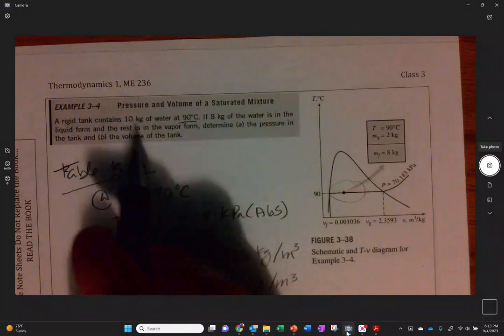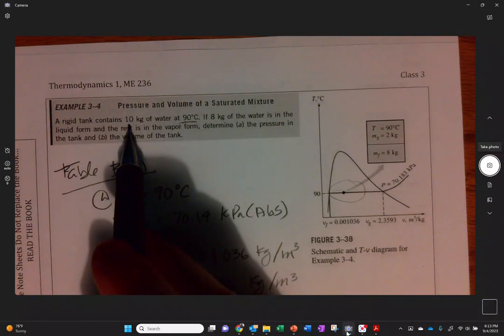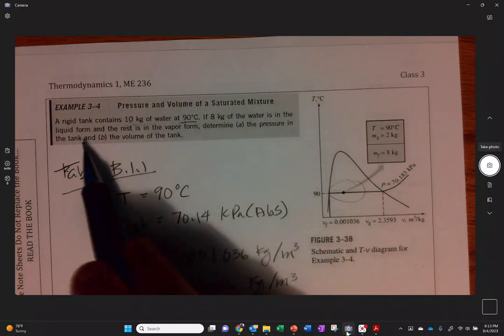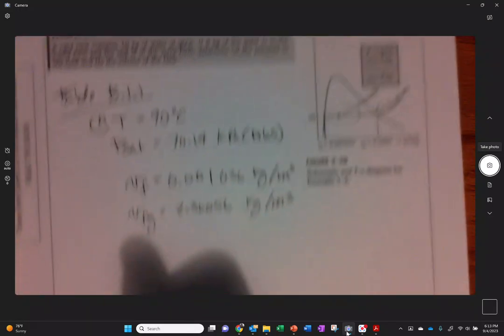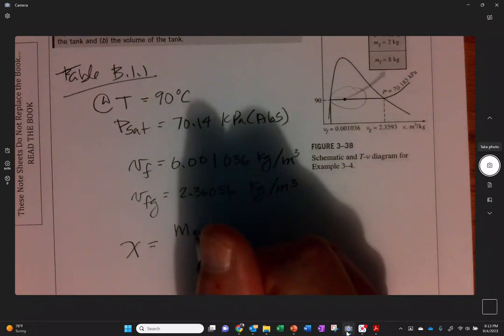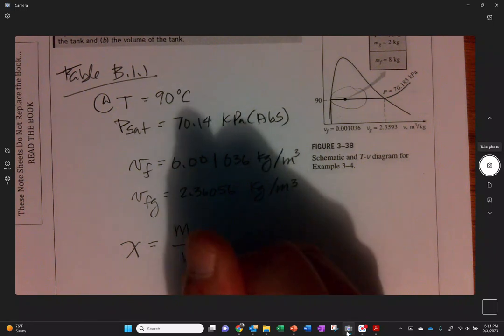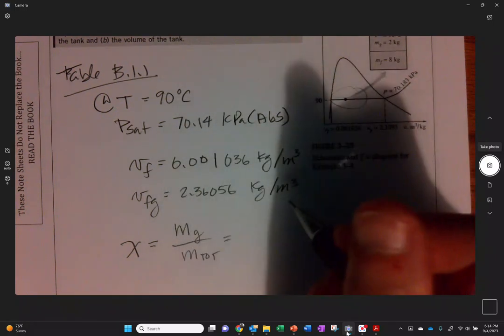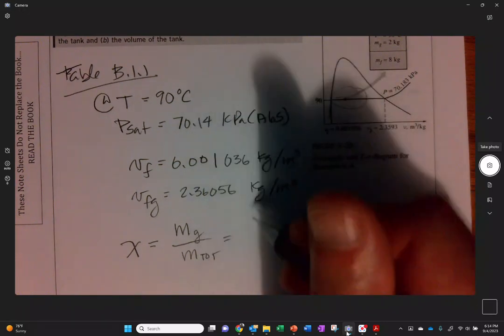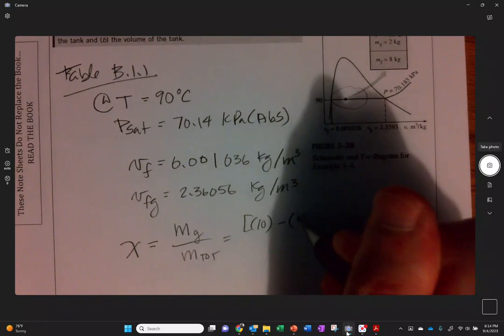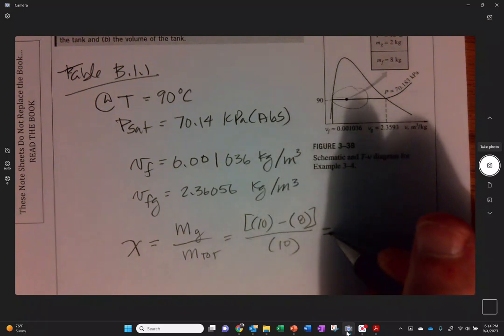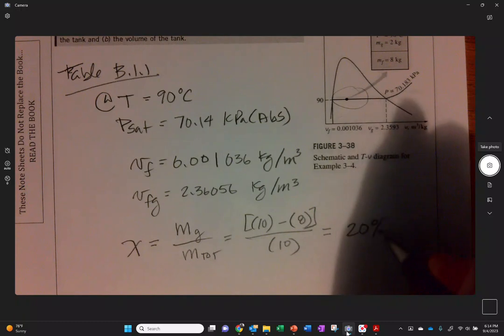So right in the B table, B1.1, at T equals 90 degrees Celsius. Write down what the PSAT is, 70.14. That's below atmosphere pressure. VF is 0.001036 and VG is 2.36056 kilograms per cubic meter. So we have 10 kilograms of water, 8 kilograms in liquid form.